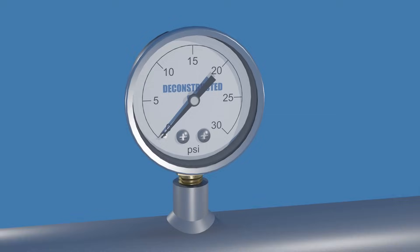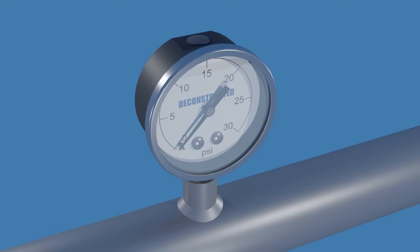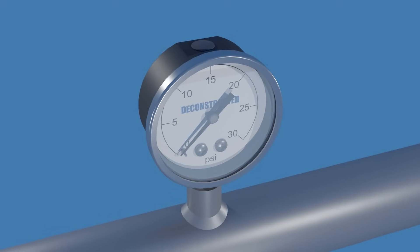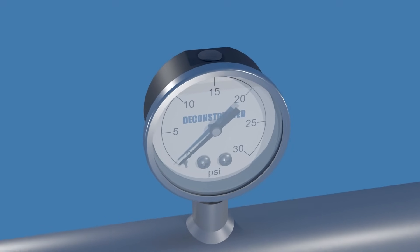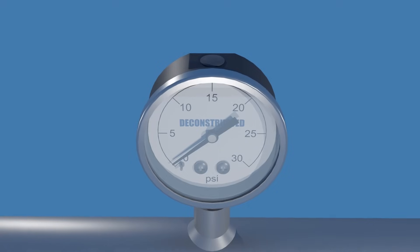A pressure gauge can be dry or filled with liquid on the inside. Wet gauges have a fill plug that is also used for venting the gauge.